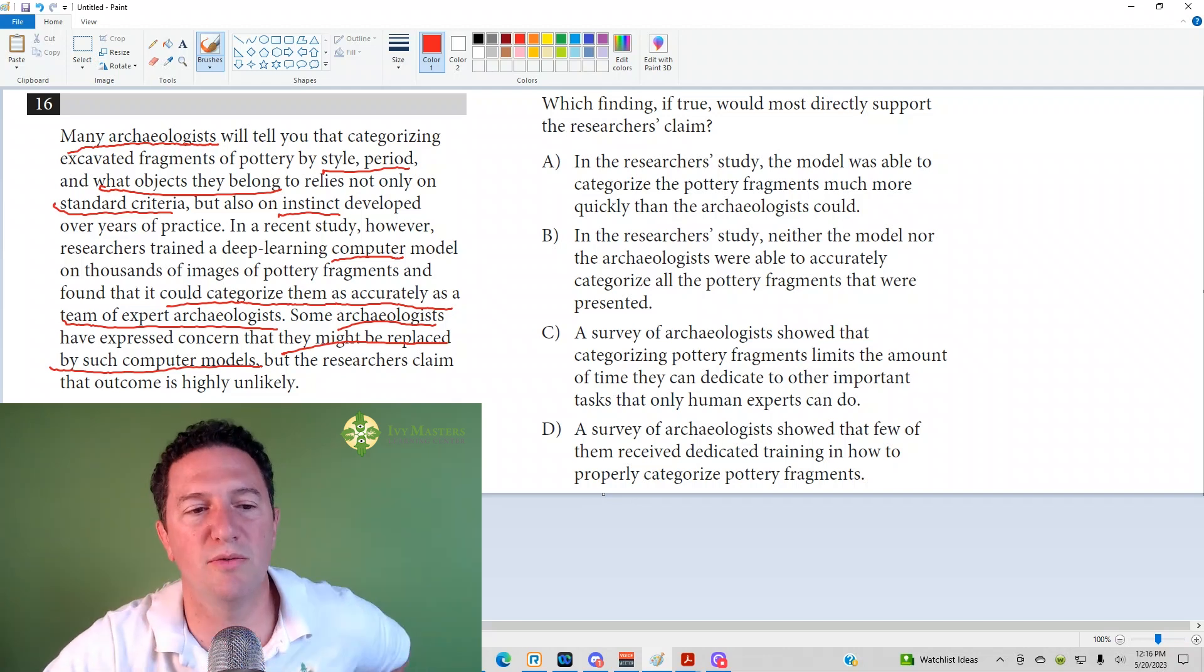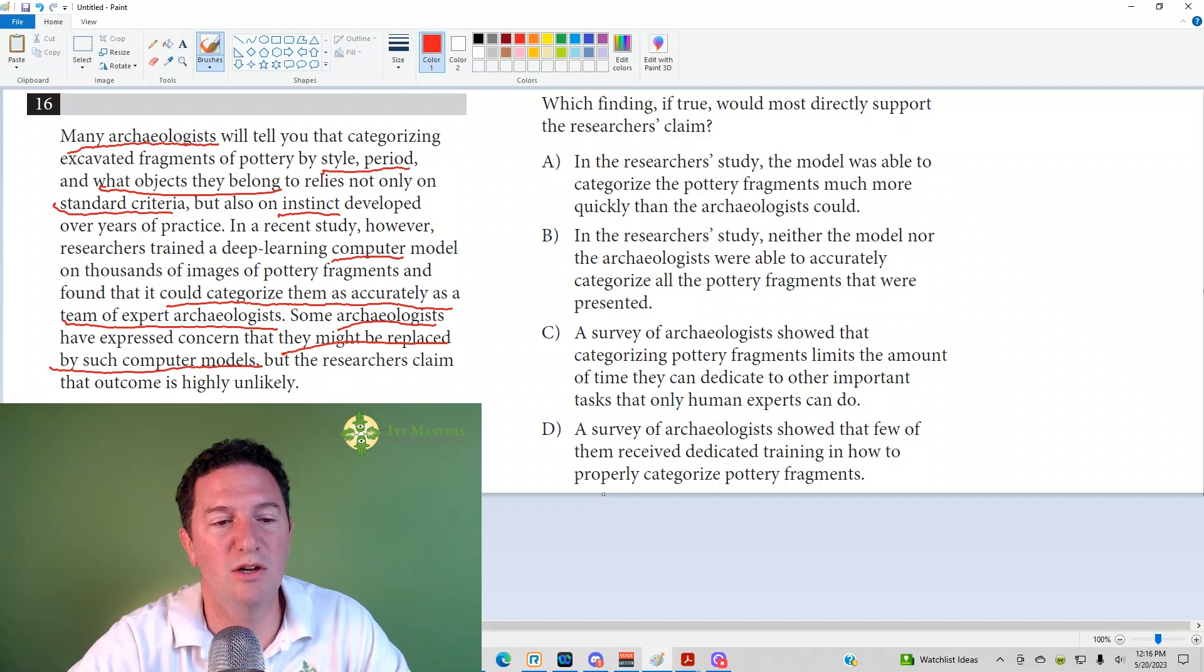So we've got two groups here. We've got the researchers, and we've got the archaeologists. Archaeologists are like, yeah, use some instinct. And then the computer, the researchers find that a computer could do the job just as accurately as them. So now the archaeologists are like, oh no, am I going to have a job? Am I going to be replaced by a computer? And the researchers say, no, it's probably very little chance that's going to happen.